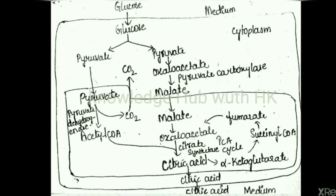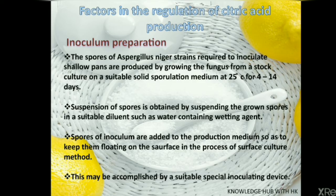Here, the biosynthesis pathway is given. As you can see, glucose is converted into two molecules of pyruvate through the glycolysis pathway, and with the help of pyruvate carboxylase enzyme, pyruvate is converted into oxaloacetate. It is finally condensed to form citric acid with the help of citrate synthase enzyme.